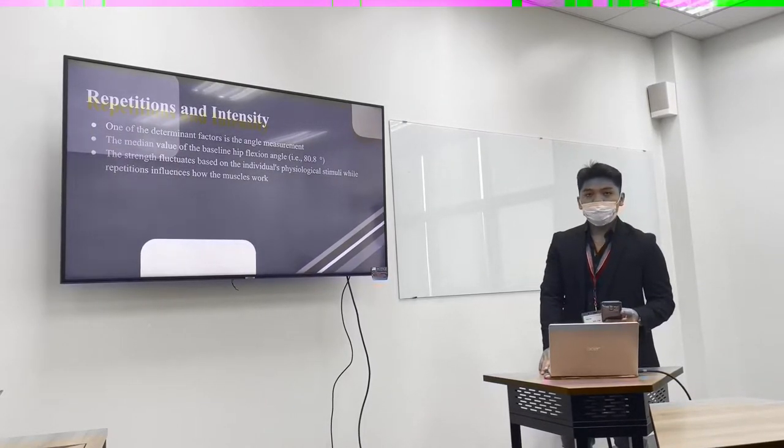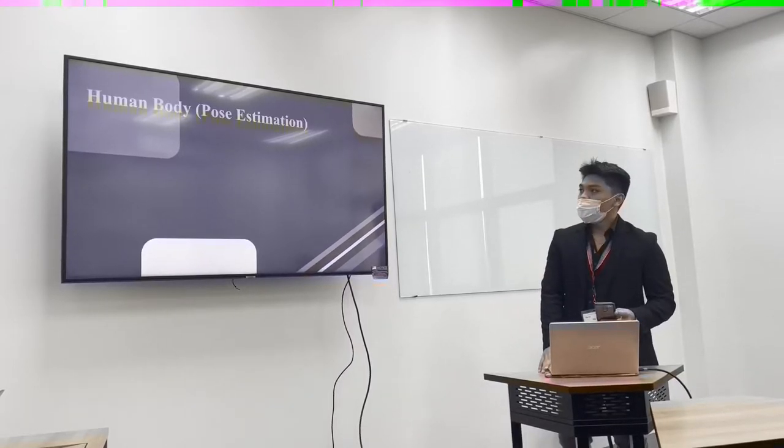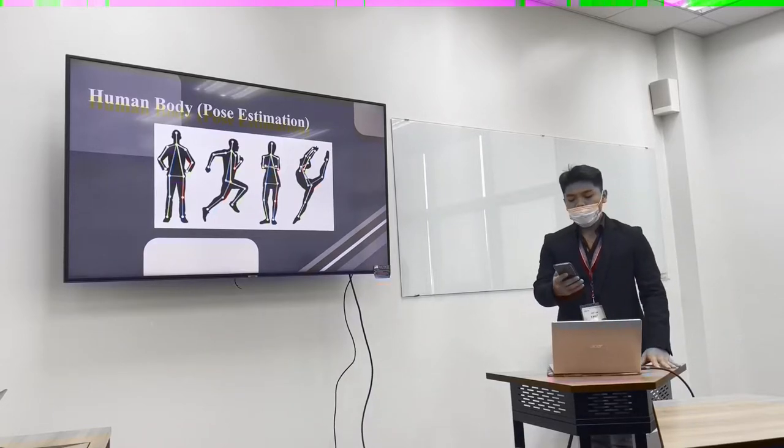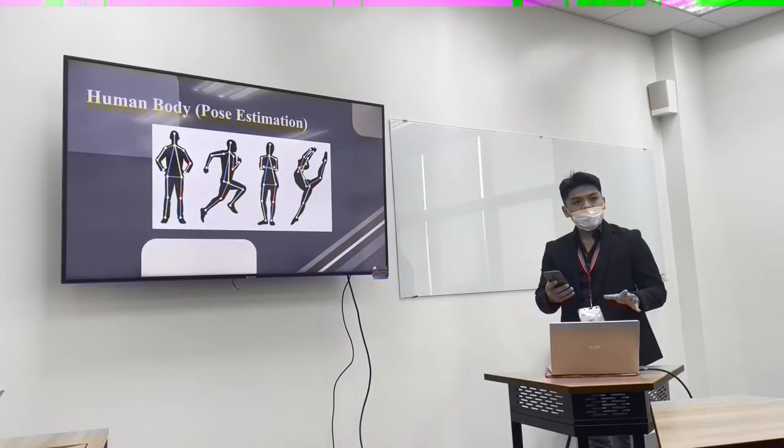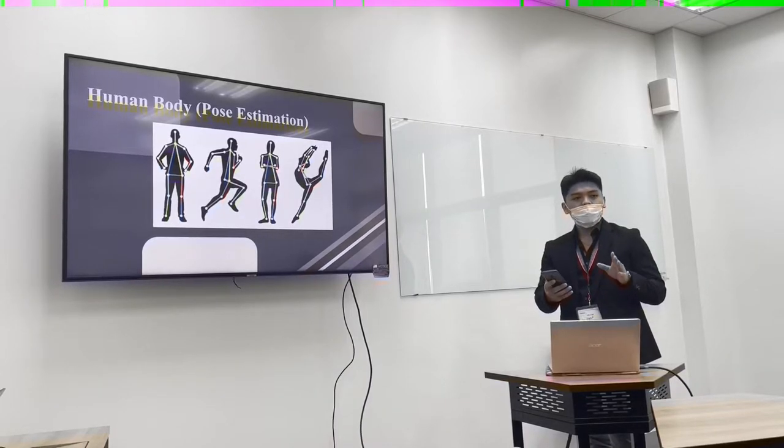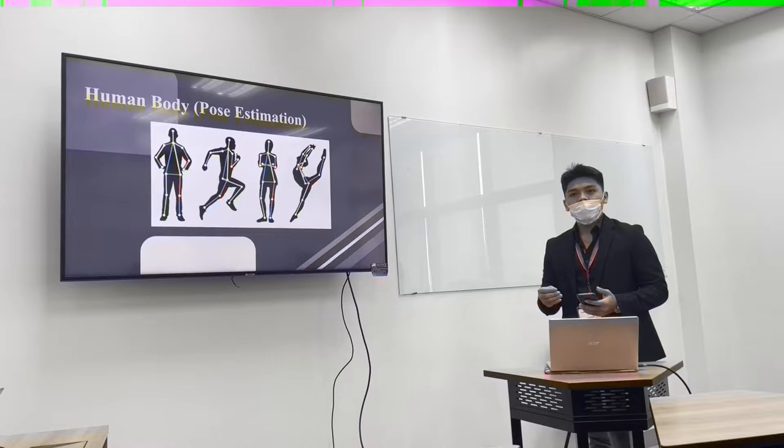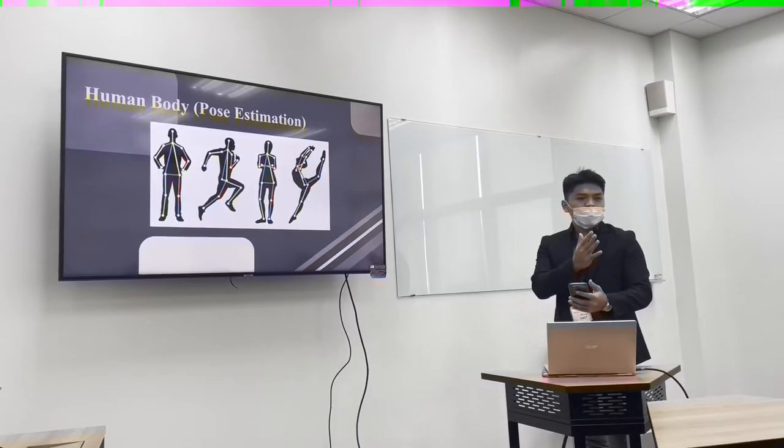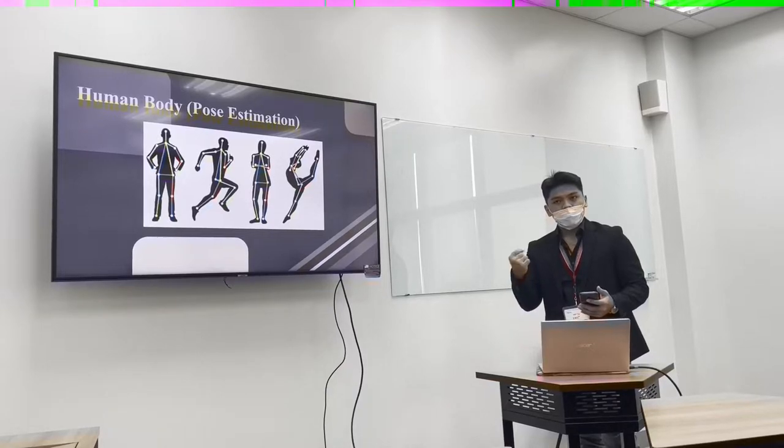So I'm going to explain to you what is the brief summary of human post estimation. Human post estimation is a computer vision task that includes detecting, associating and tracking human semantic key points. The semantic key points refers to the body joints. For example, the shoulders, your left knee, your wrist, etc.